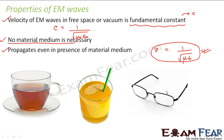Let's take an example — suppose you wear spectacles. Spectacles means you have glass, and glass is a medium. When light rays fall on your spectacles, they can pass through the glass. That means light waves can propagate in the presence of a material medium such as glass. As Hertz found, the behavior of electromagnetic waves in many ways was similar to that of light waves. Later in this chapter we will see that light is nothing but a particular category of electromagnetic waves itself.